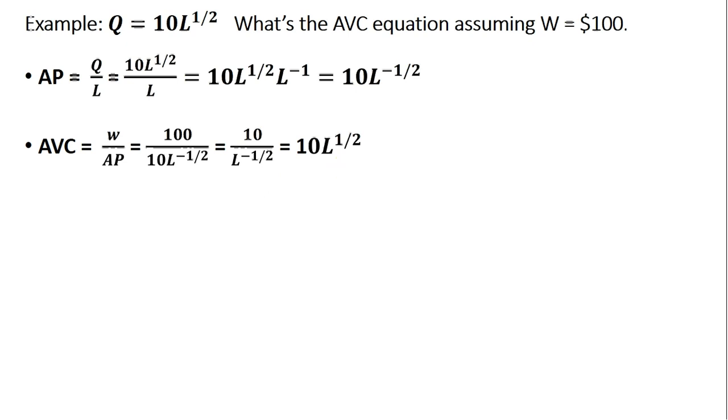When we express average variable cost, we usually express it as a function of output. So we're going to make a substitution into this average variable cost equation, so we can have average variable cost as a function of output, not units of labor.